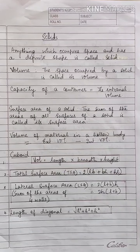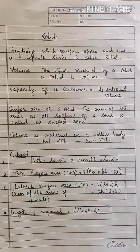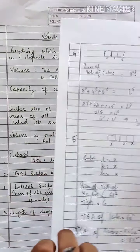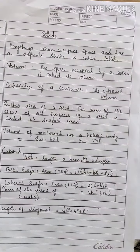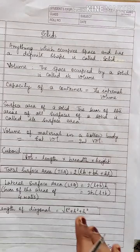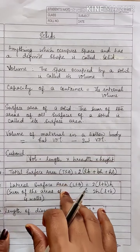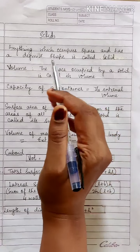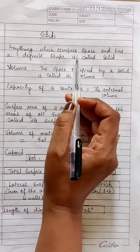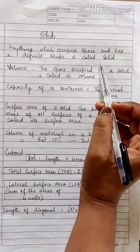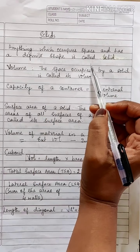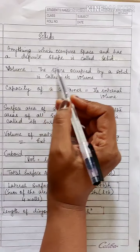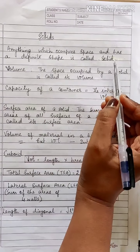Hello students, in this class we will learn about solids. What is a solid? Anything which occupies space and has a definite shape is called a solid.